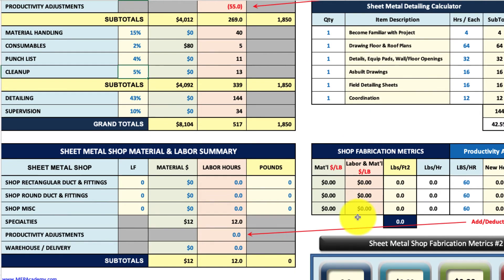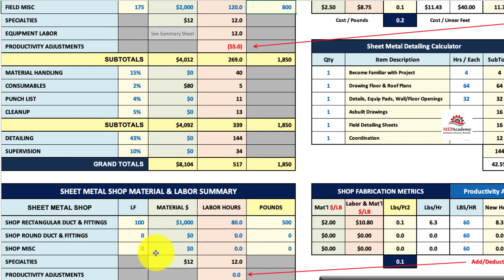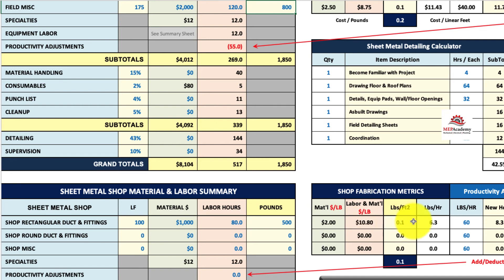Moving down to the shop section — if we put in, say, 100 feet, a thousand dollars in material, 80 hours in the shop, and 500 pounds, then you can see it comes out to two dollars per pound for the material, and $10.80 for material and labor combined. Here are your parametrics.